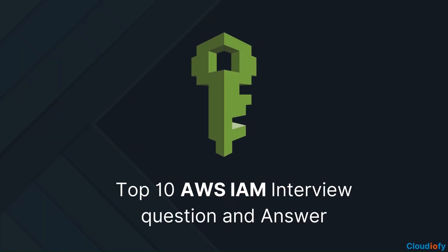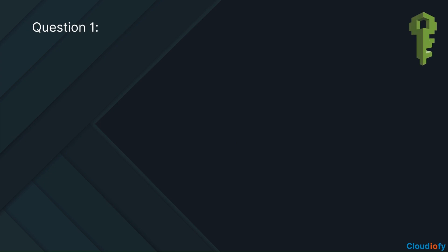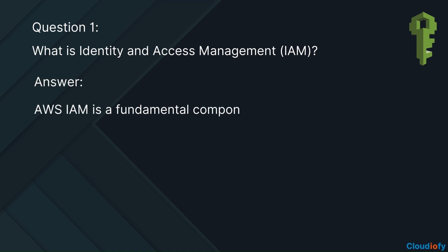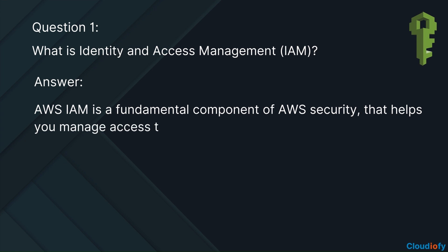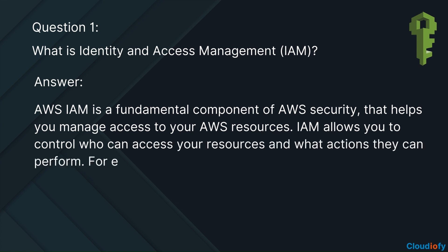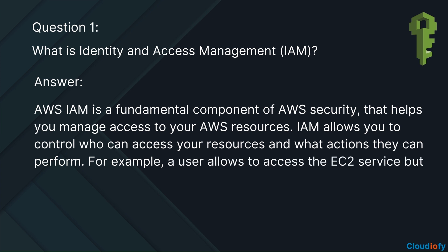Top 10 AWS IAM interview questions and answers. The first question is: what is Identity and Access Management, IAM? AWS IAM is a fundamental component of AWS security that helps you manage access to your AWS resources. IAM allows you to control who can access your resources and what actions they can perform. For example, a user is allowed to access the EC2 service but denied access to S3.